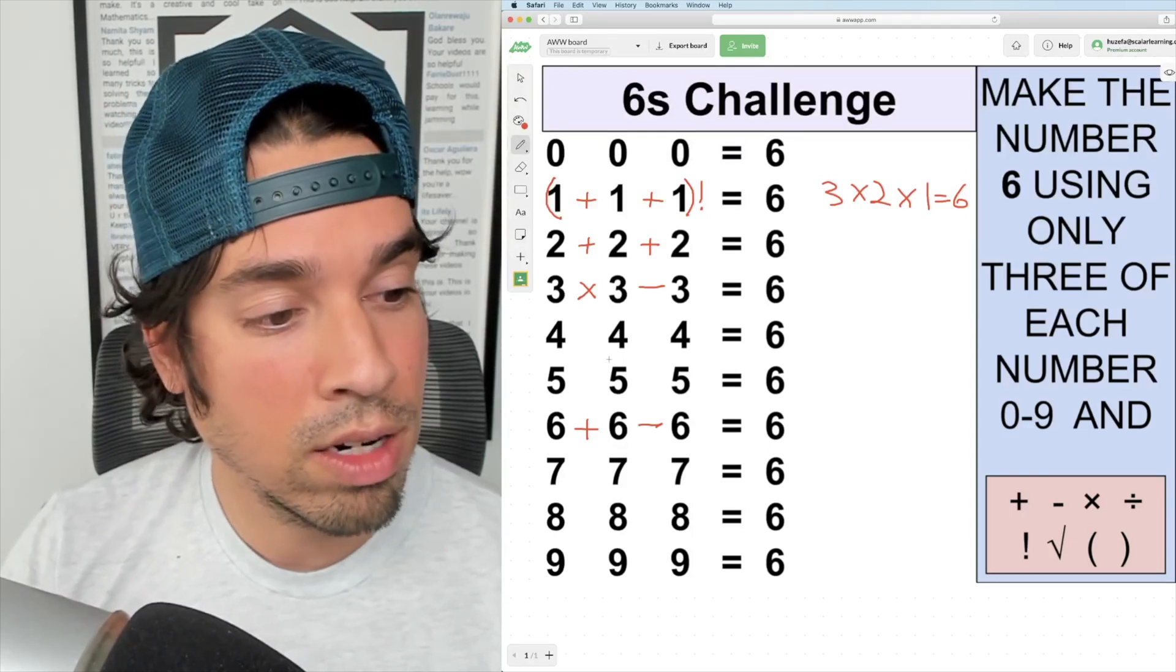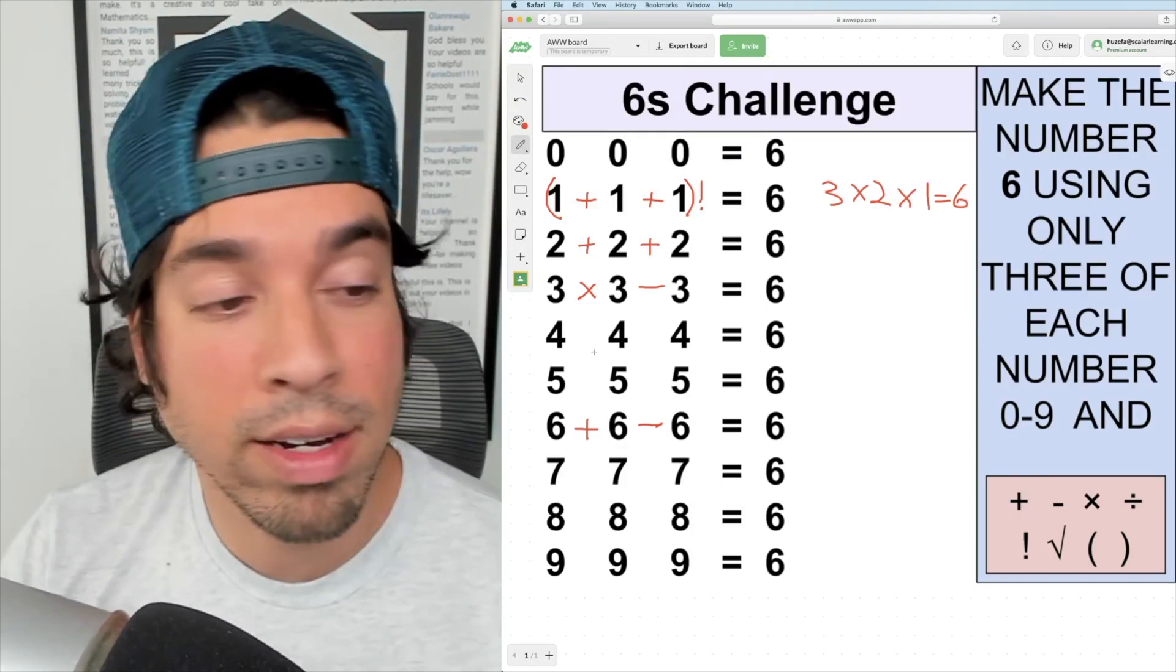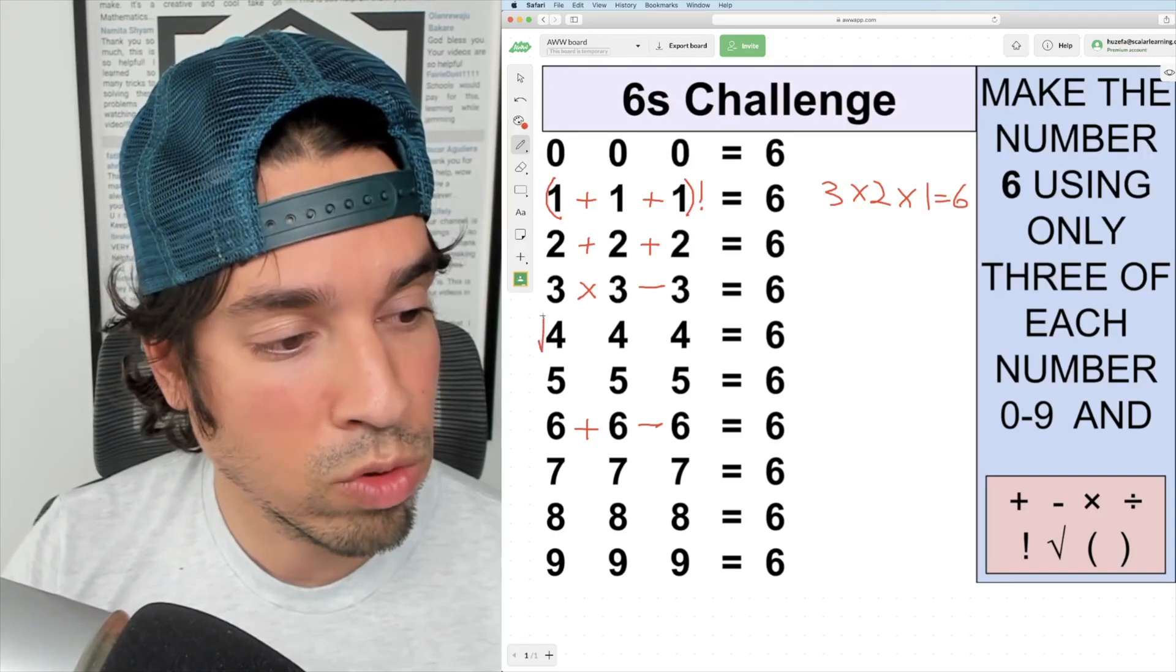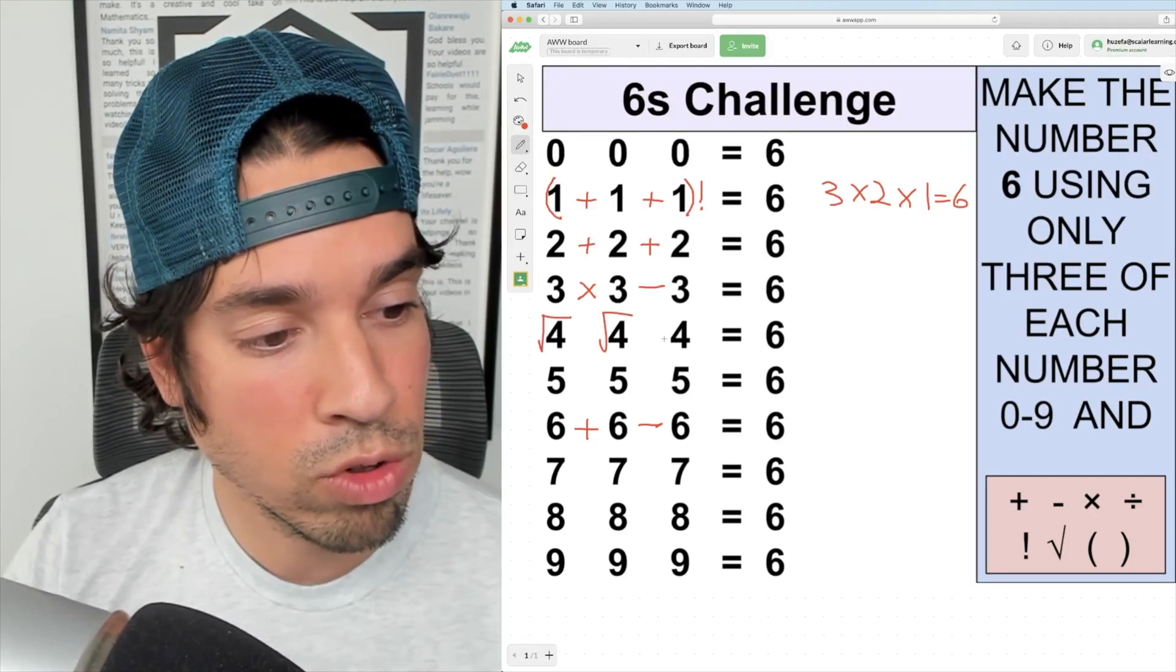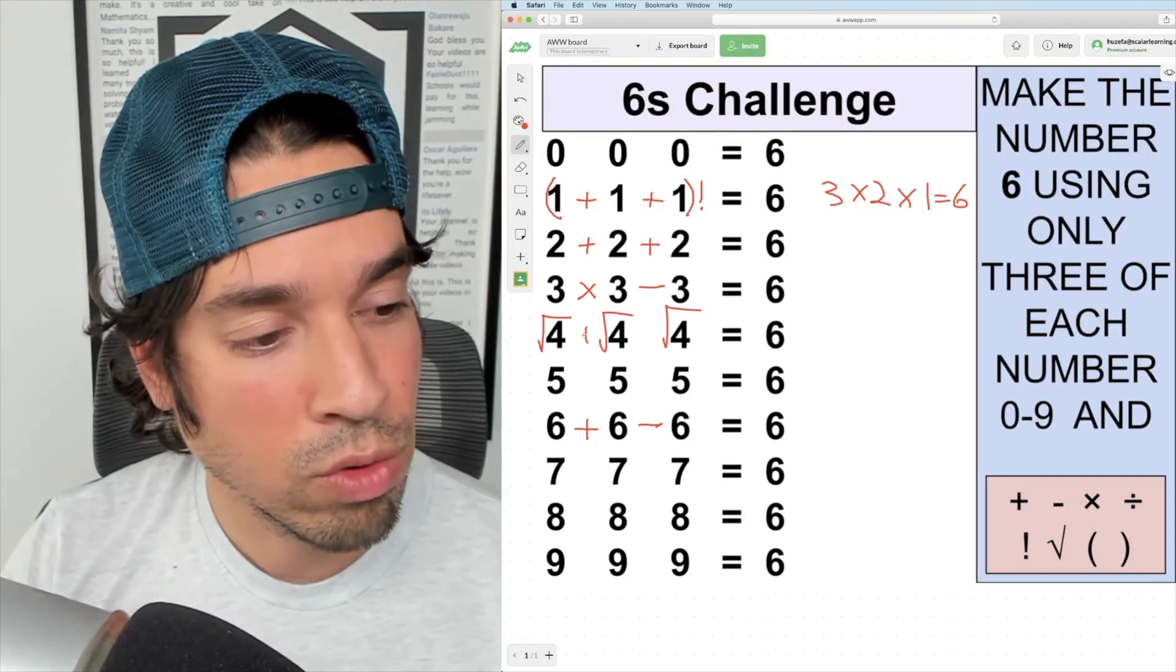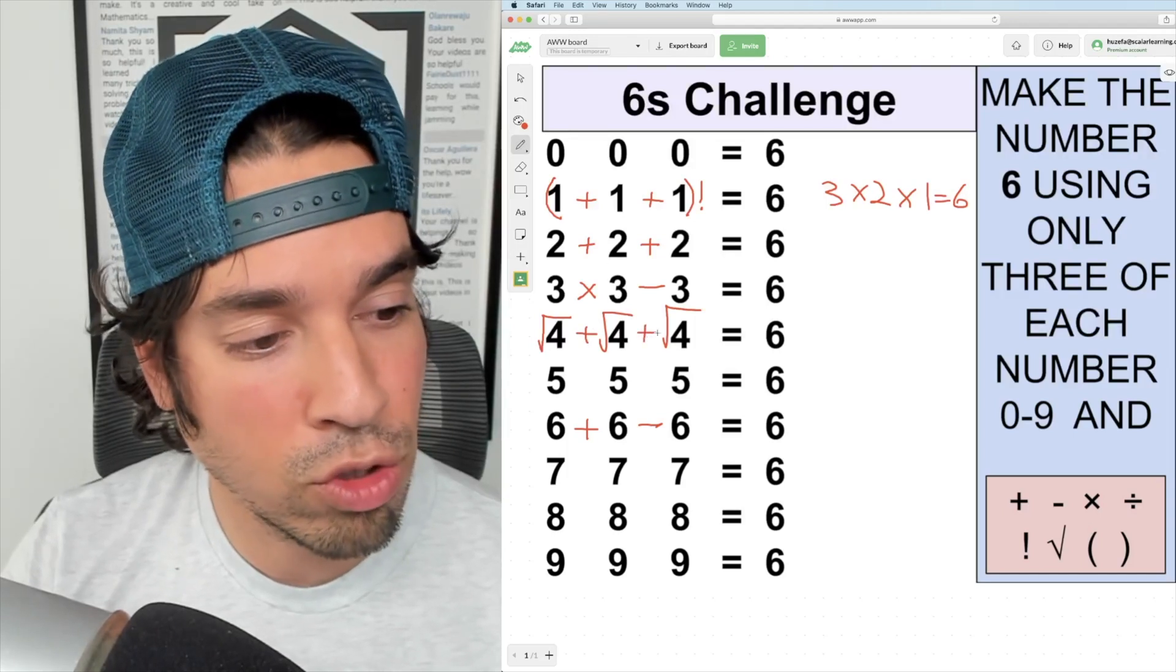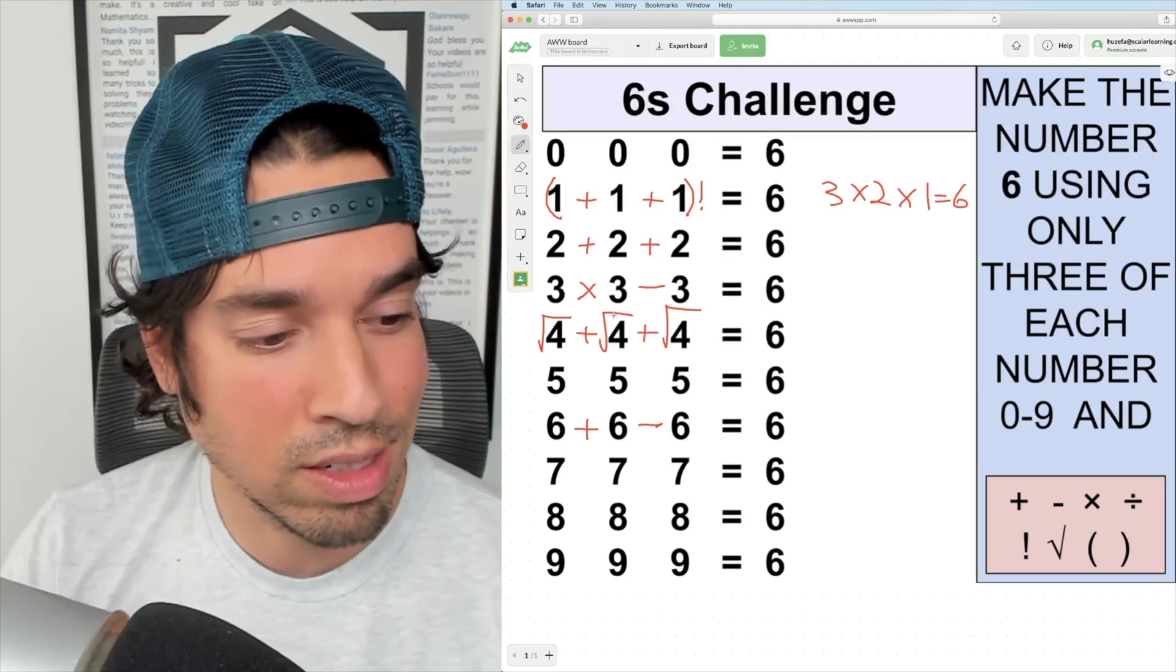Next, let's go on to four. I can do something interesting: take some square roots. What's the square root of 4? The square root of 4 is, of course, 2. So now we're back to the twos. 2 + 2 + 2 equals 6, and we're done.